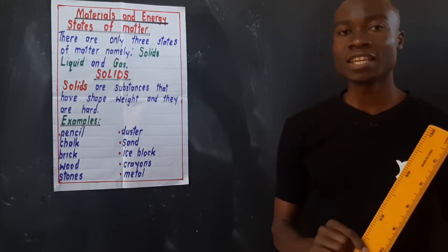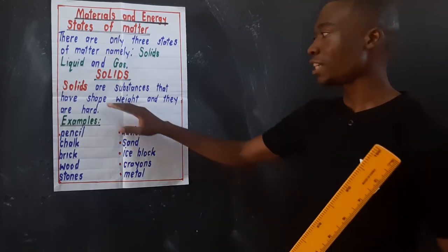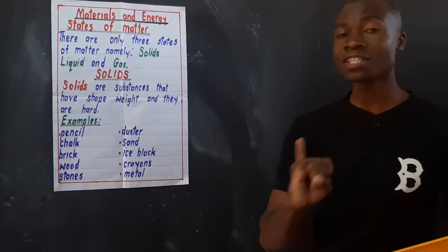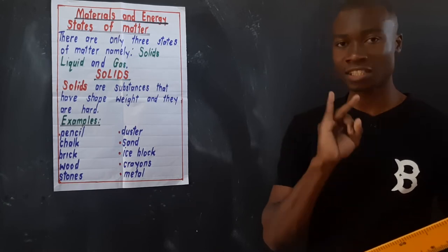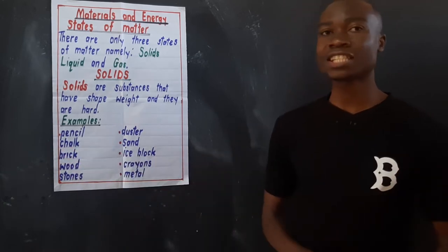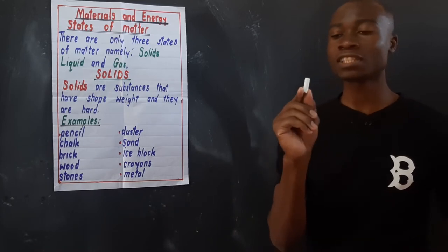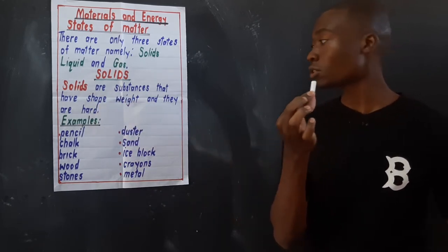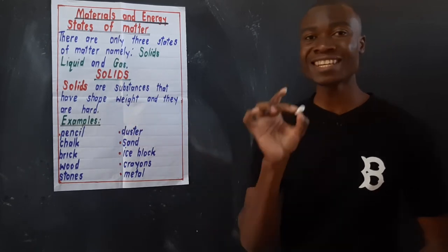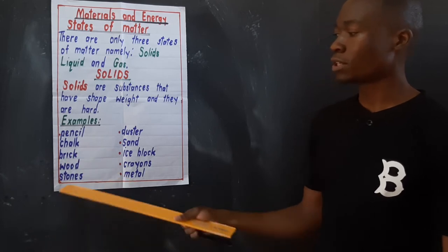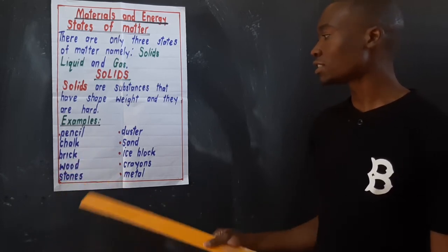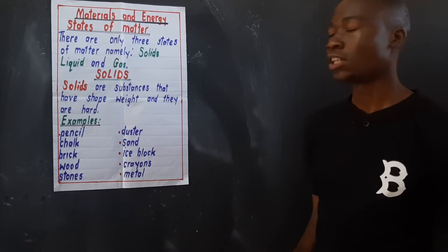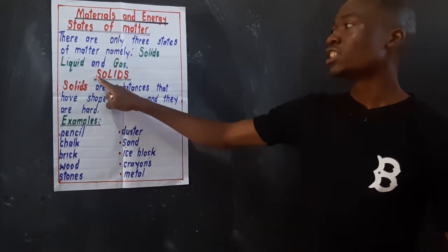Then apart from that, we say they are hard. So when you touch these, when you hold the solids, they are hard in nature. If you compress them, they can even break. We also looked at examples of solids: a pencil can be a solid because it has shape, it has weight, and it is also hard. We also looked at a piece of chalk — it is in form of a solid because it has shape, weight, and it is hard. Apart from that, we also looked at a brick, wood, stones, sand, ice block, crayons, and metal. So all these things are in a solid state.